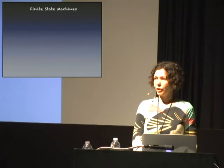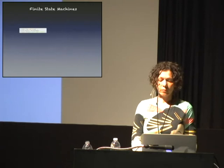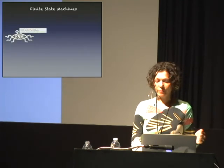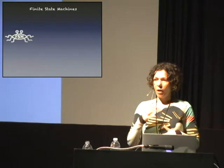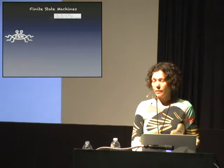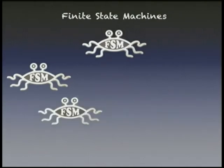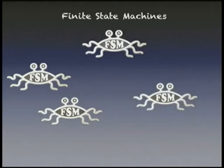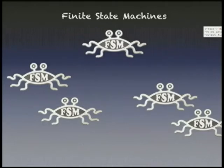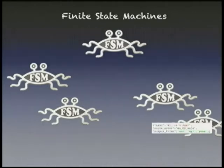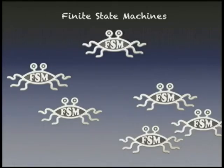Our HTTP handler will create a finite state machine for every single add/update request. So we get a request, we spawn a finite state machine, and it's going to handle it. We get another request, and we spawn another finite state machine. If you are tired of me saying this over and over again, just imagine how tired our HTTP server is of spawning those things.